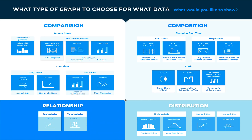To determine which chart is best suited for each of those presentation types, first you must answer a few questions. How many variables do you want to show in a single chart — one, two, three, many? How many items or data points will you display for each variable — only a few or many? Will you display values over a period of time or among items or groups?